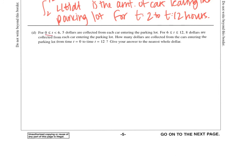Part D says, for the first 6 hours, $5 are collected from each car entering the parking lot. And then from hours 6 to 12, $8 are collected from each car entering. How many dollars are collected from the cars entering the parking lot from 0 to 12 hours? We know that if I integrate a rate, I get an amount. So if I integrate the cars entering my lot from 0 to 6, that's going to tell me how many cars entered from 0 to 6 hours, and I'm making $5 for each of them. So I'm going to multiply that integral by 5.